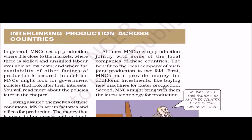Interlinking production across countries: In general, MNCs set up production where it is close to markets, where skilled and unskilled labour is available at low cost, and where the factors of production are assured. In addition, MNCs must also look for government policies that look after their interests.